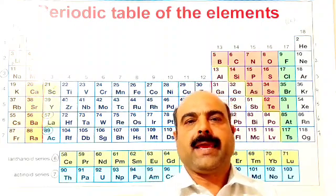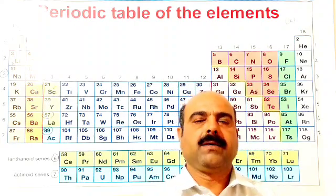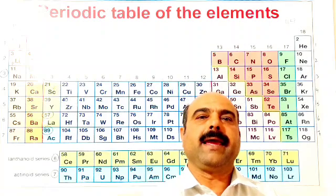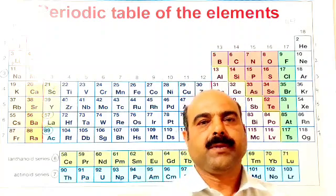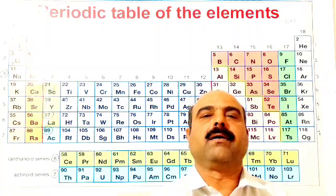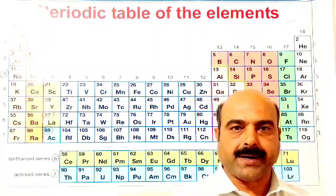Period number 2 and period number 3 both contain 8 elements each. And these are called the short periods of the periodic table.